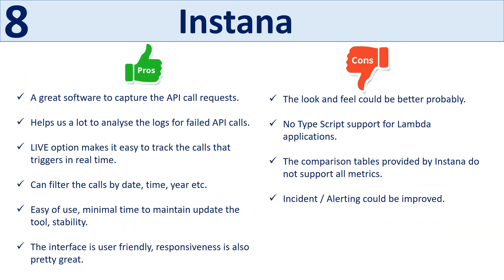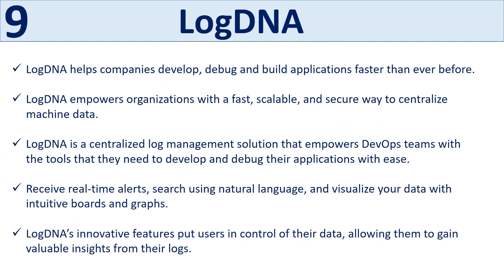Pros of Instana include being great software for capturing API call requests, helping analyze logs for failed API calls, a live option making it easy to track calls triggering in real time, the ability to filter calls by date, time, year, etc., reducing extra time and effort to analyze API failures, ease of use, minimal time to maintain and update the tool, a user-friendly and responsive interface. Cons include the look and feel needing improvement, no TypeScript support for Lambda applications, unintuitive trace analysis filters, comparison tables not supporting all metrics, and incident alerting needing improvement.